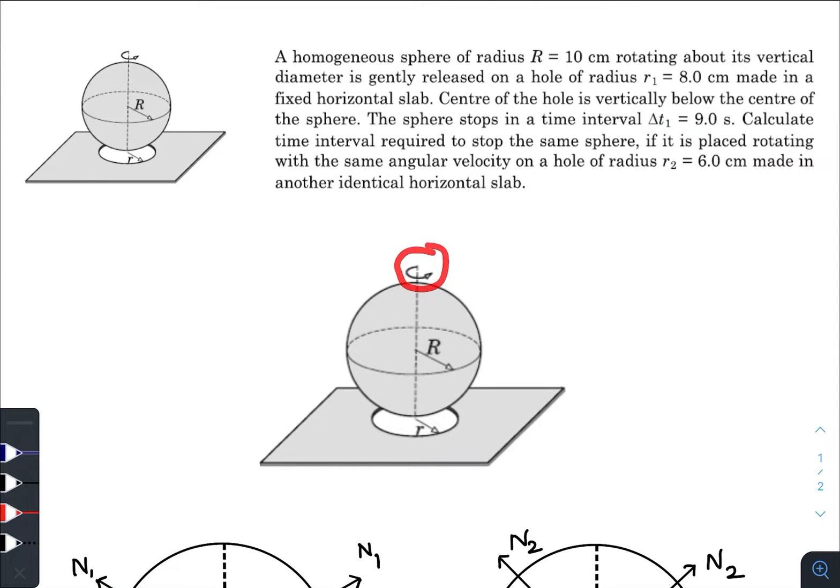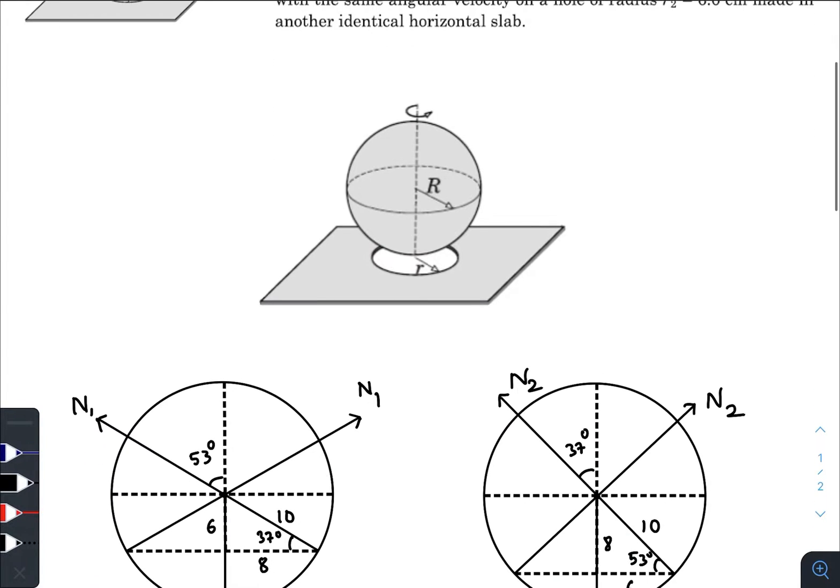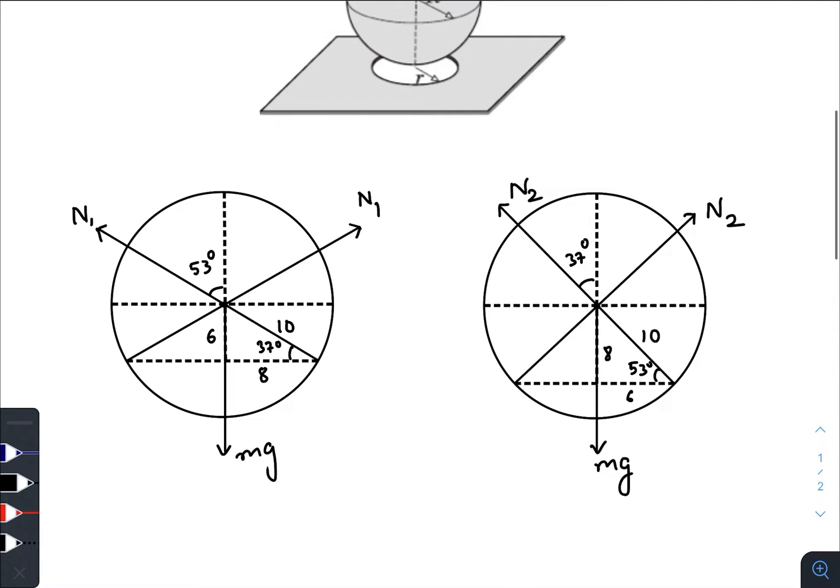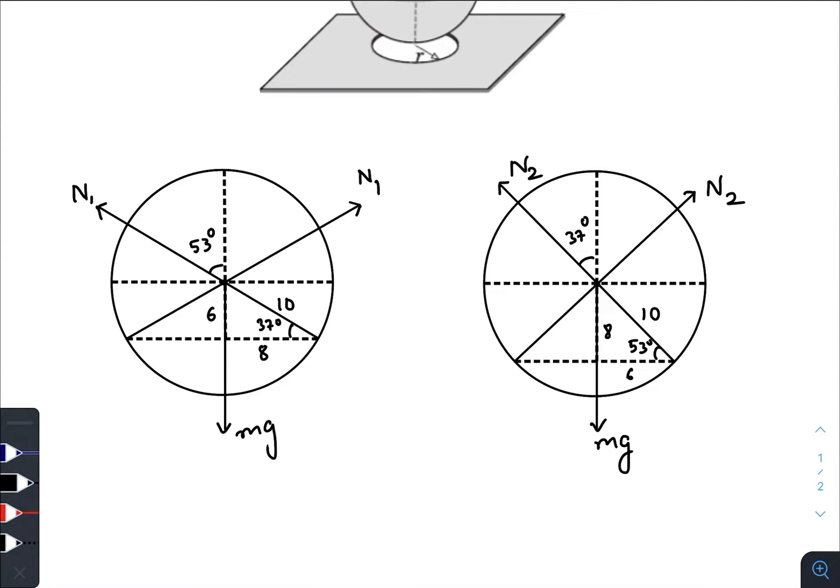So initially when the radius was eight centimeter, time taken by the sphere was nine seconds. We need to find out the time interval required to stop the same sphere if the hole was of radius six centimeter. Fine, so I have already drawn two diagrams here.